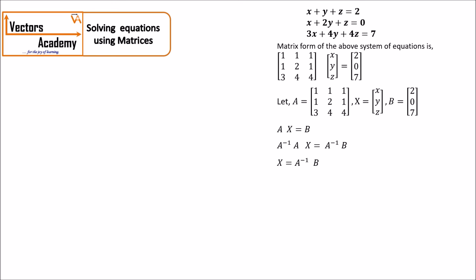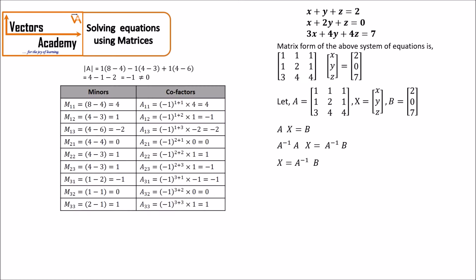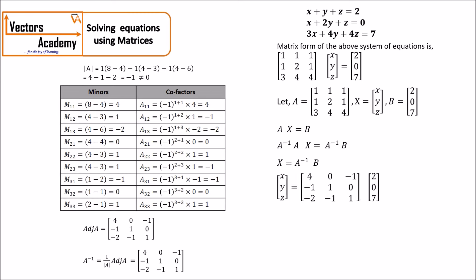What we need to do is find the inverse of matrix A and multiply it by matrix B. We have already seen how to find the inverse using the adjoint method. We find the inverse of matrix A using the adjoint method, which comes out to be [4, 0, -1; -1, 1, 0; -2, -1, 1]. We then multiply this matrix with matrix B, that is [2, 0, 7]. Once you multiply, we get a matrix which gives the values of x, y, and z.